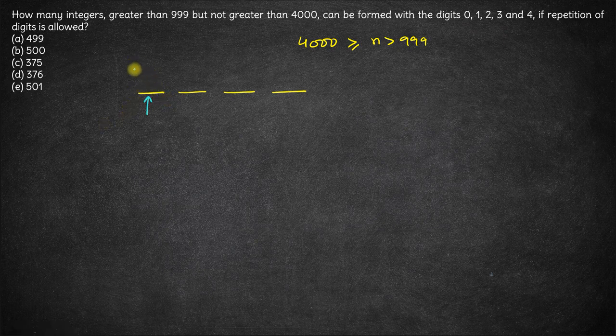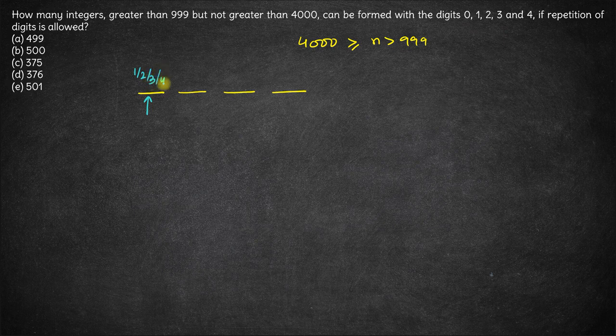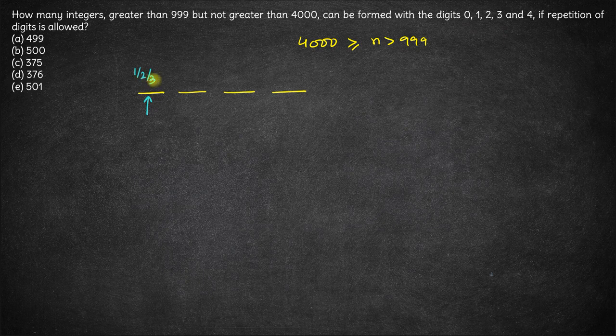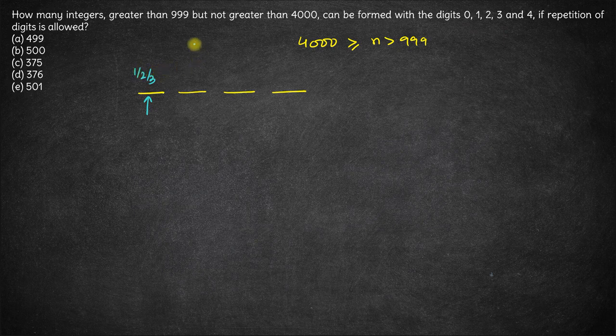Now the thousands digit can be either 1, 2, 3 or 4. But with 4 there is a problem. There is only one number starting with 4 that can be formed using these digits and that is 4000. So let's not consider 4 here. We will be considering 4 separately. So the required number can start with 1, 2 or 3.